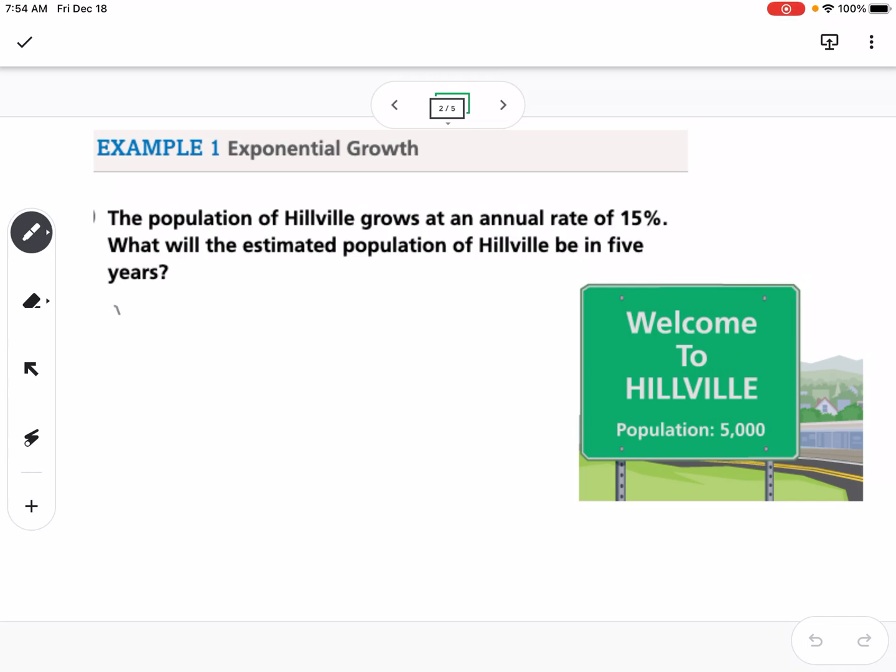So our equation to model exponential growth is f(x) = a(1 + r)^x. R is our rate, but we have to put it into a decimal, so we have 15%, and if we write that as a decimal we divide by 100, so we would get 0.15.